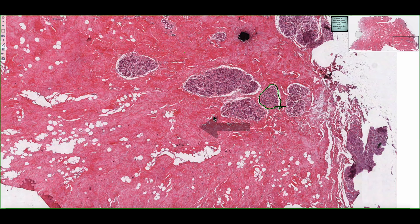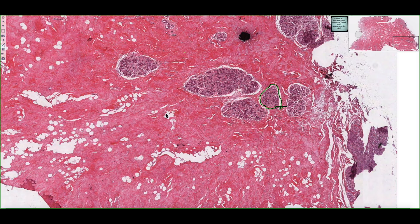This is a tissue section of an inactive mammary gland. We can see that it's characterized by a vast network of dense, irregular connective tissue. And within it, we can see patches of adipocytes or adipose tissue.